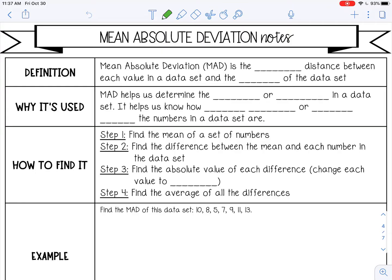Welcome to this lesson on mean absolute deviation. The mean absolute deviation, or the MAD, is the average distance between each value in a data set and the mean of that data set.